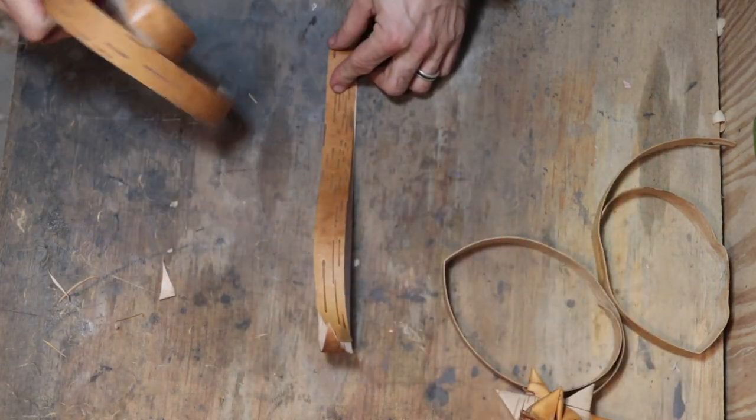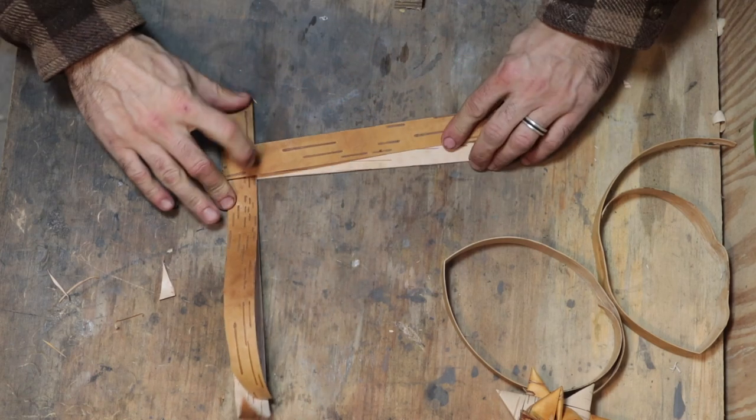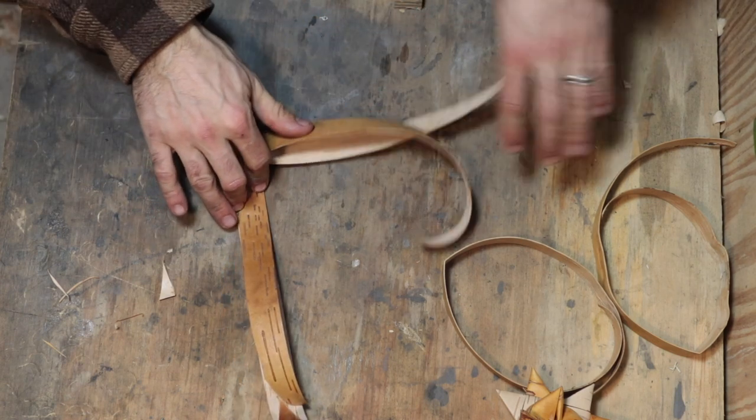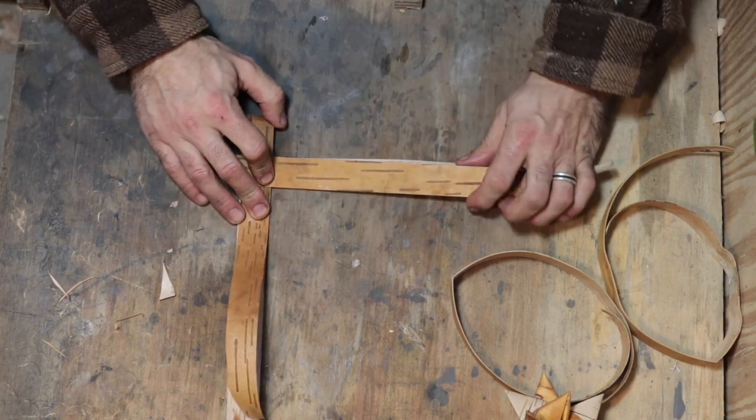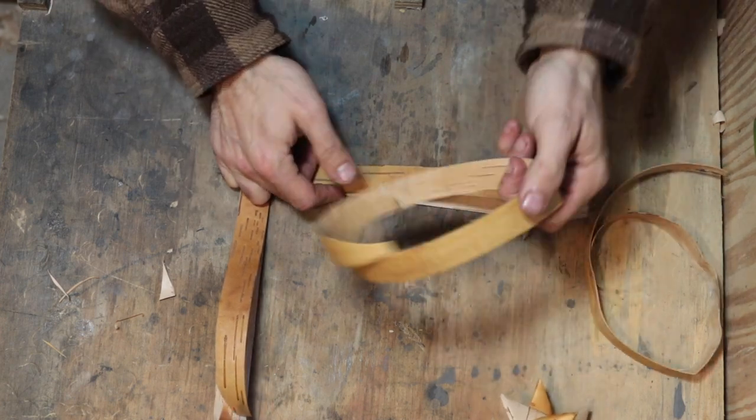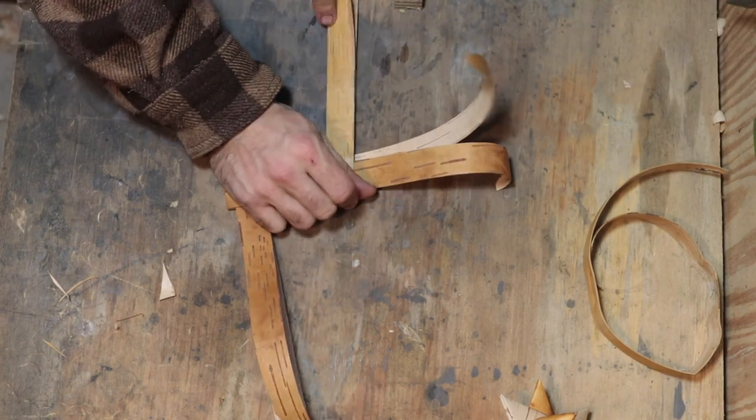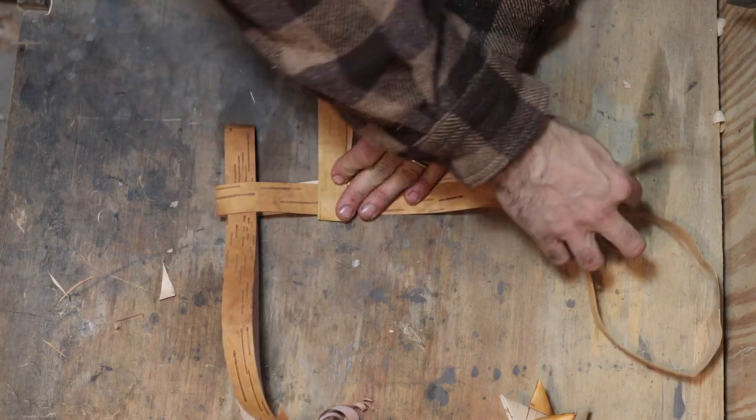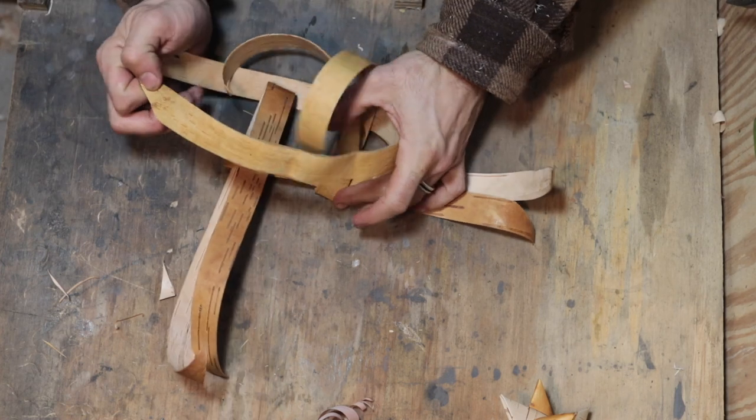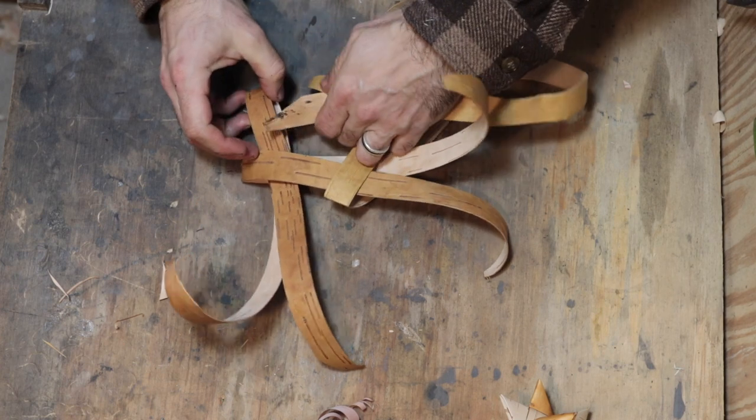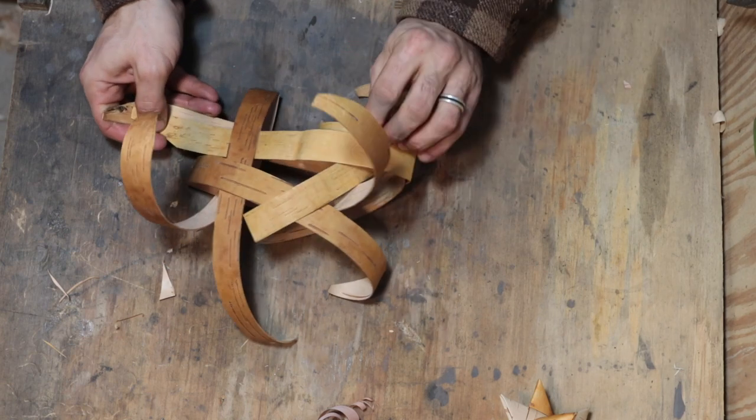Now I'm going to take the next one and hook it over it, leaving a loop down below there. What I want to make sure though is that the longest side is on the bottom for all of them. Then the third piece is going to go around this one. Then the fourth piece is going to go around the third one, but then through the loop at the bottom of the first one.